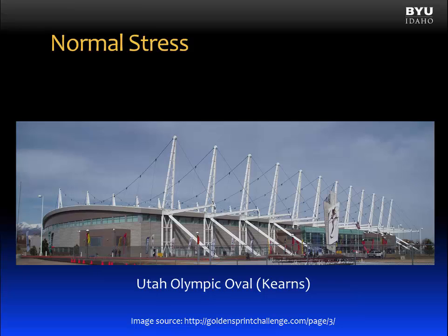Let's look at an example of normal stress occurring in a structure. Here's a picture of the Utah Olympic Oval that was built for use in the 2002 Olympic Winter Games held in Salt Lake City. This is a very interesting structure. You can see that the roof is supported by cables that run over a tower and are attached to the ground. This allows a large open space inside so that spectators have unobstructed views of the sporting events.